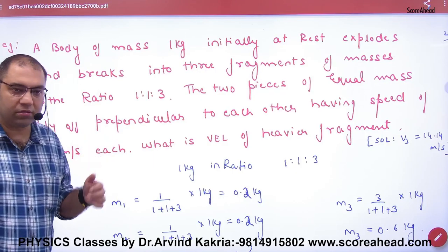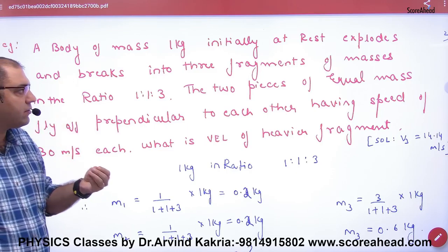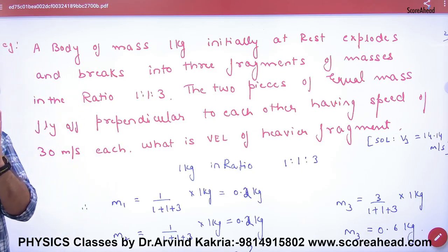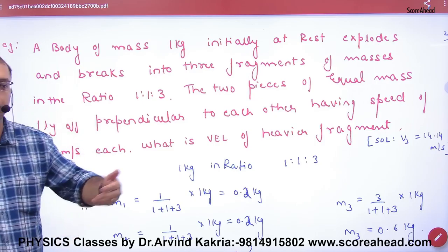A body of mass 1 kg initially at rest explodes and breaks into 3 fragments. The body breaks into 3 pieces with masses in the ratio of 1 to 1 to 3.